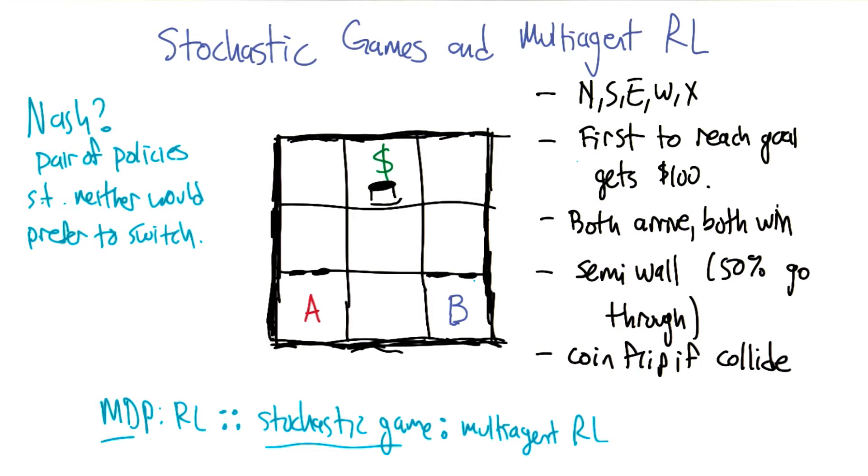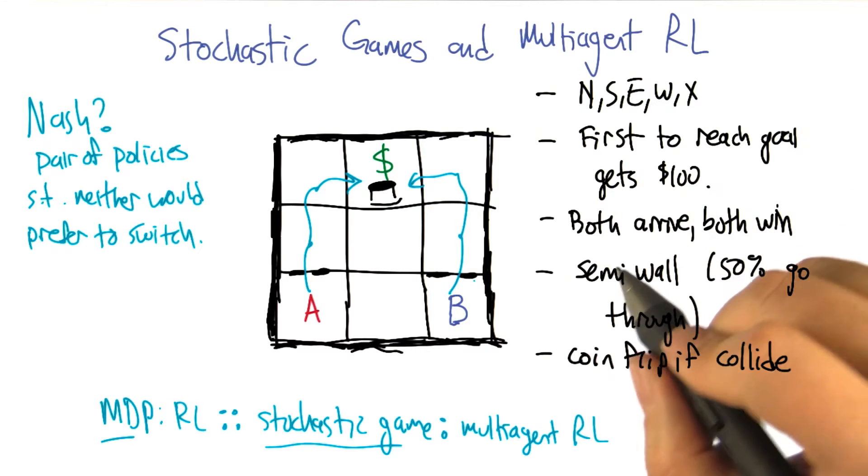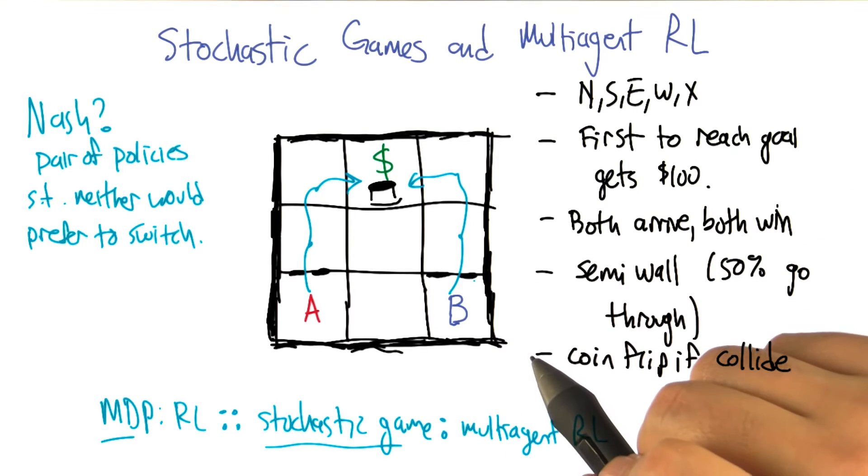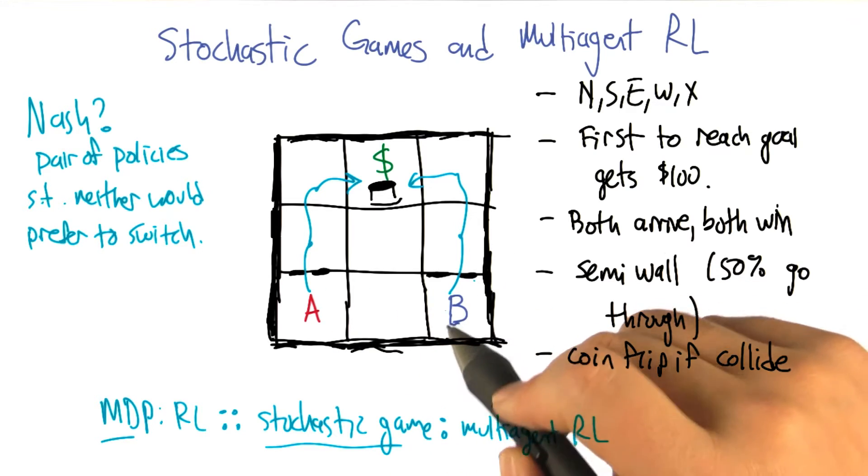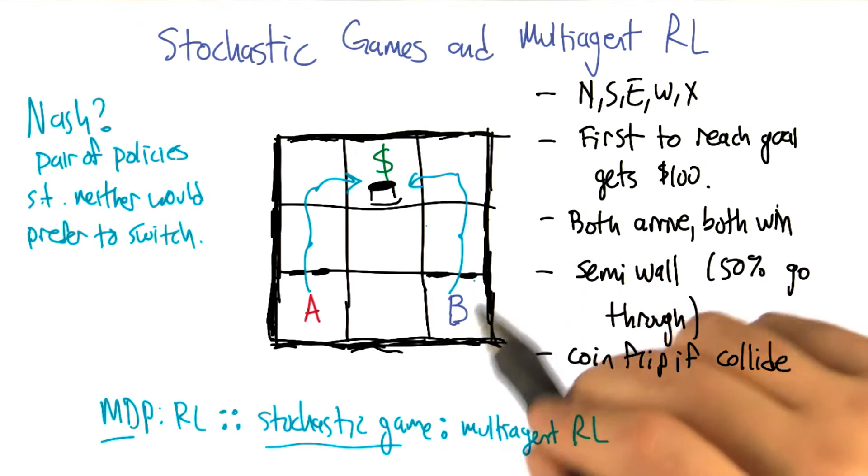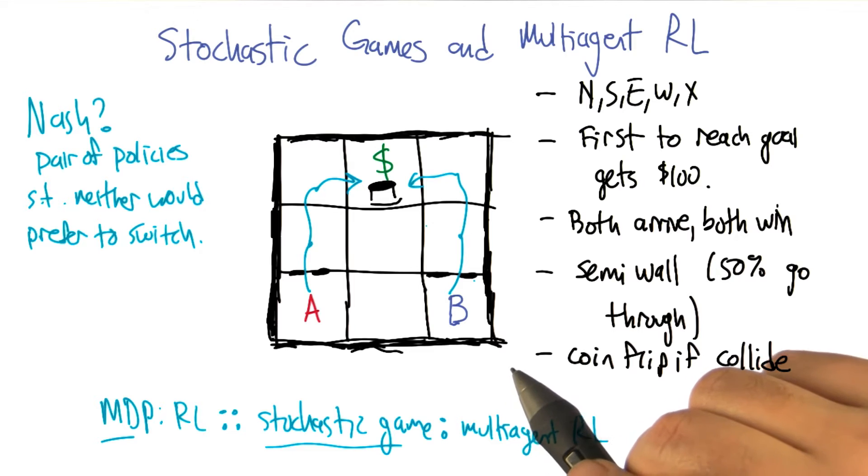So can you think of a pair of policies that would have that property? Well, no. I'm not sure. I was trying to think about that. So I was thinking that if I were a nice guy, what I'd want to do is I'd want both to try to go through the semi walls. And if we both go through the semi walls, we just go up again and then we hit the dollar sign at the same time. And that's very nice. So, okay, good. So that seems like a cooperative kind of strategy, right? Where 25% of the time both will get through, both will go to the goal together. Hooray. Yeah, 25% of the time neither one will get through and then we're in the same place we were before, so that's okay. That's right. The problem is the other 50% where one of them gets through and the other doesn't.